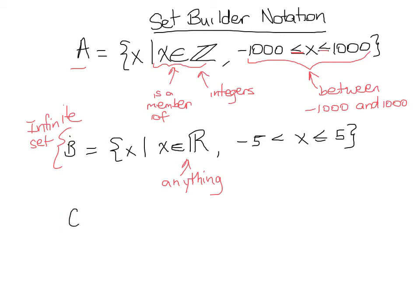and we were in the set of rational numbers, for a very similar reason, this set will also be infinite. You cannot list every single fraction or every single thing that can be expressed as a fraction between negative 5 and 5, and therefore this set is also infinite.